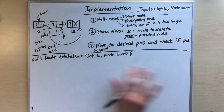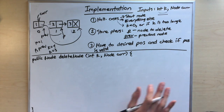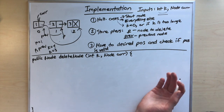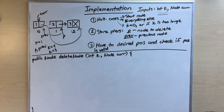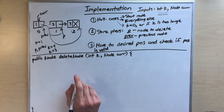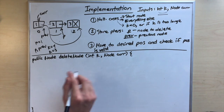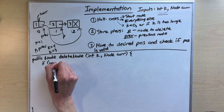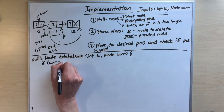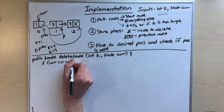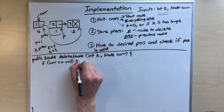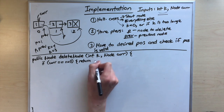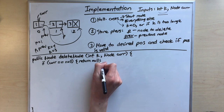First, handle the case where cur is null — if the linked list is empty, we just return null with no changes.